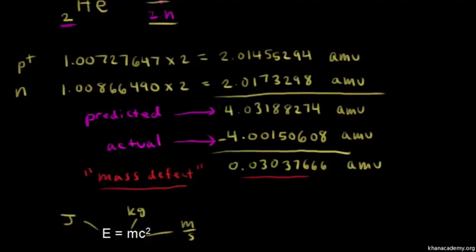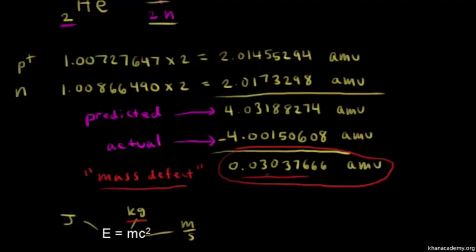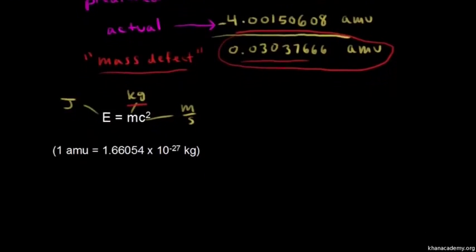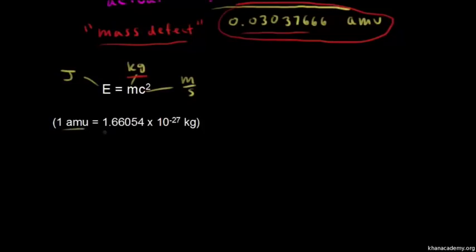Let's calculate the mass we're dealing with here. Using Einstein's equation, we need kilograms, but we've calculated the mass in AMUs, so the first thing we need to do is convert AMUs into kilograms. So 1 AMU is equal to 1.66054 times 10 to the negative 27 kilograms. Let's go ahead and write down our value: 0.03037666 AMUs.